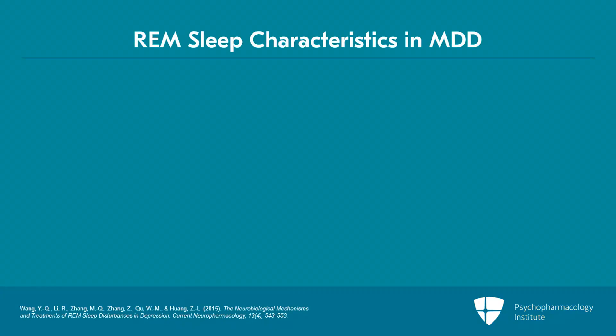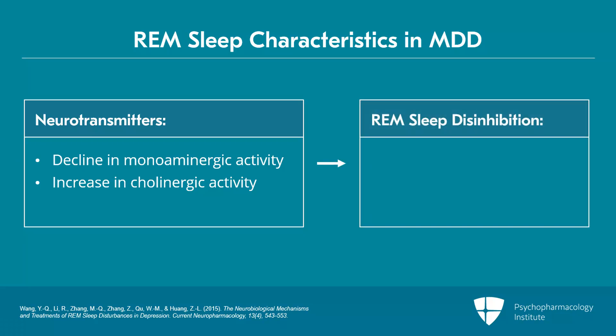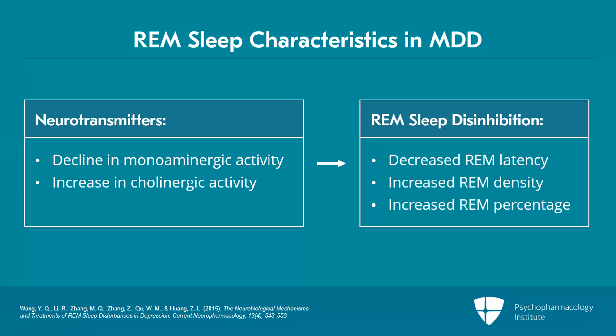REM sleep onset is associated with a decline in monoaminergic activity and an increase in cholinergic activity. This explains REM sleep disinhibition in major depressive disorder, which is characterized by monoaminergic-cholinergic imbalance with decreased monoaminergic activity and increased cholinergic activity. Major depressive disorder is characterized by a state of REM sleep disinhibition, as suggested by decreased REM latency, increased REM density, and increased REM percentage.